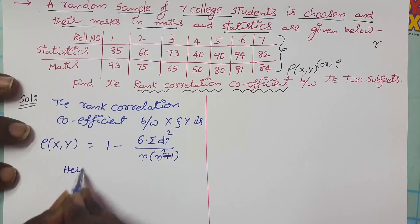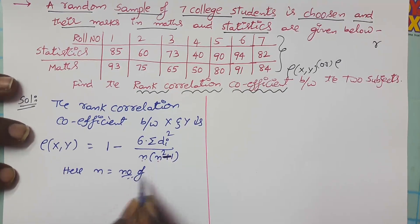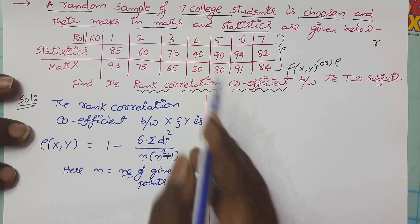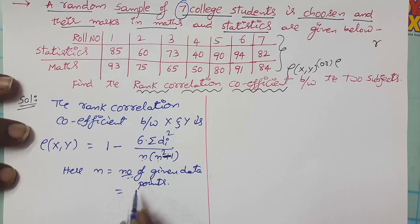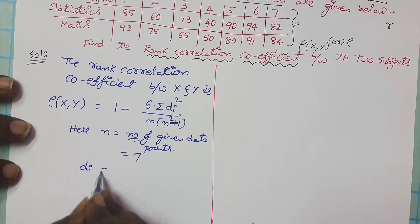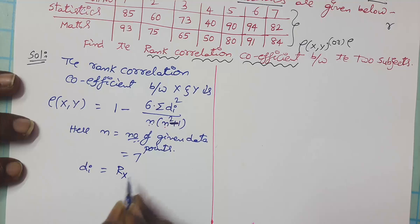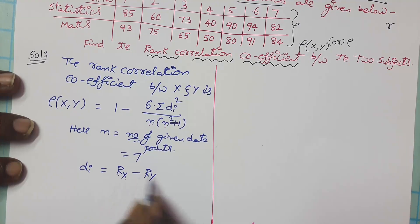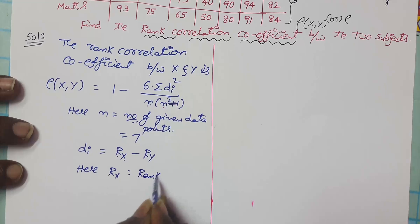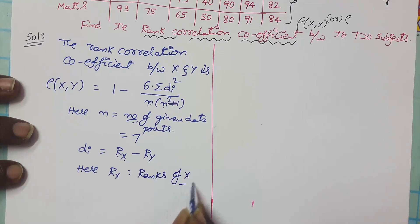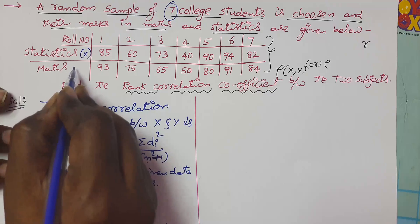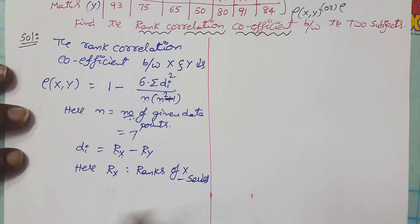Here what is n? Number of given data points. In the problem, data is given for seven students, so number of observations is seven, which is represented by n. And what is di? Di equals difference between the ranks, nothing but Rx minus Ry. Here, what is Rx? Ranks of x series.